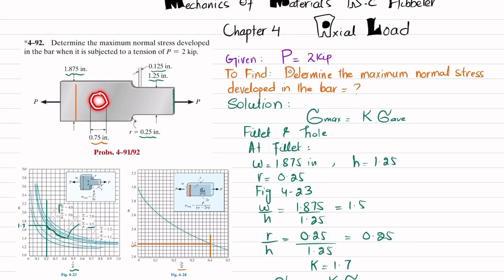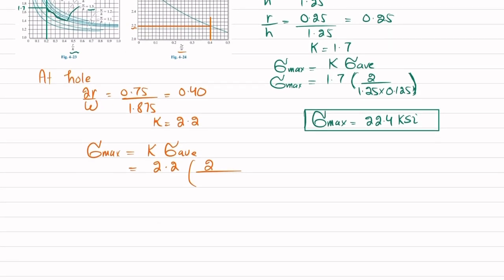You can see there is a hole, so this hole is not offering any force. Only the portion that will take this force will be this and this. How do we find this? If you take 1.875 minus this diameter of the hole times thickness, which is 0.125, that will give you the area. Because in tension, the hole does not play any role. So I will write 2 divided by (1.875 minus 0.75) times 0.125.